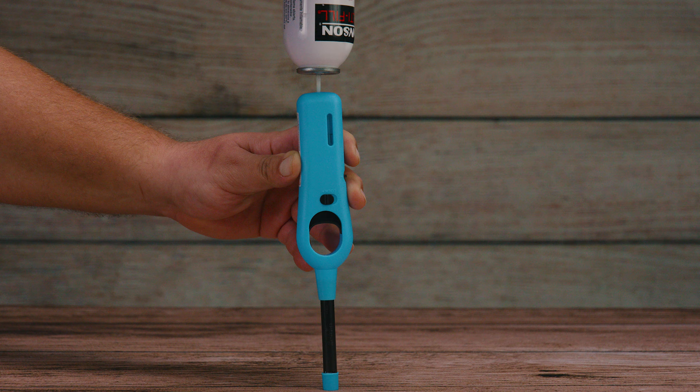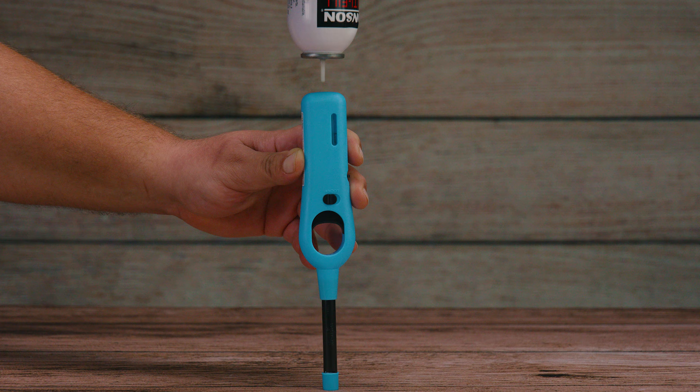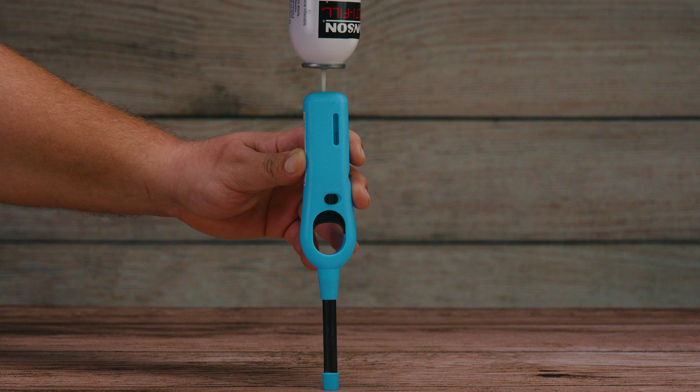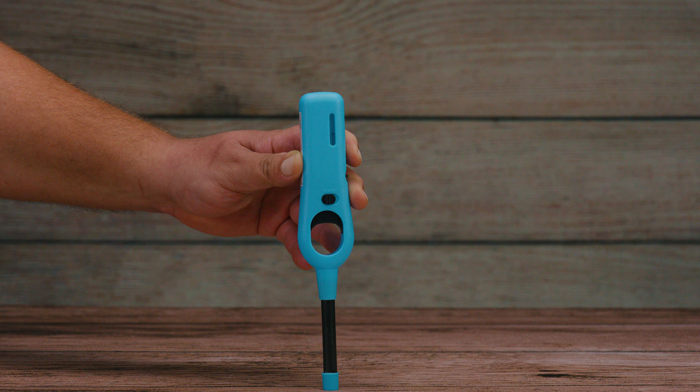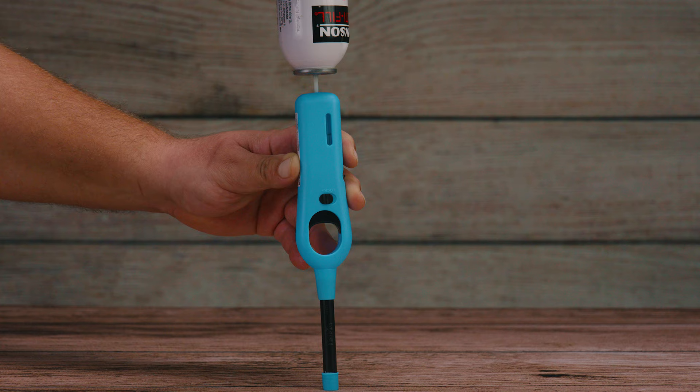If you notice the butane sprays out but it's not going in the lighter, it could be that you still have air inside the reservoir and you would have to take your sharp object and press again on the entry nozzle a couple of times to release that air. Now you're one step closer to a human flamethrower.